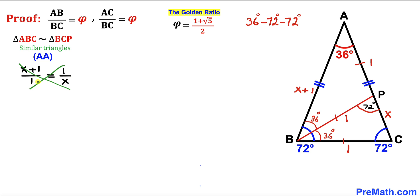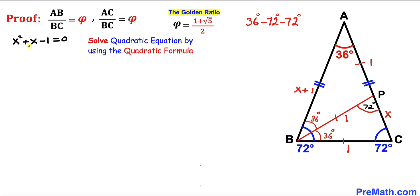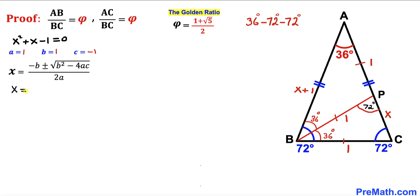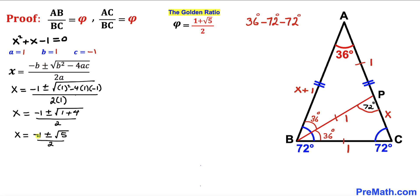Let's cross multiply. We get x squared plus x equals 1, and moving the 1 to the other side gives x squared plus x minus 1 equals 0. We have a quadratic equation and we will solve it using the quadratic formula. Our coefficients are A equals 1, B equals 1, and constant C equals negative 1. Filling in the quadratic formula: x equals negative B, which is 1, plus or minus the square root of B squared minus 4 times A times C, all over 2 times A, which simplifies to negative 1 plus or minus square root of 5, all over 2.